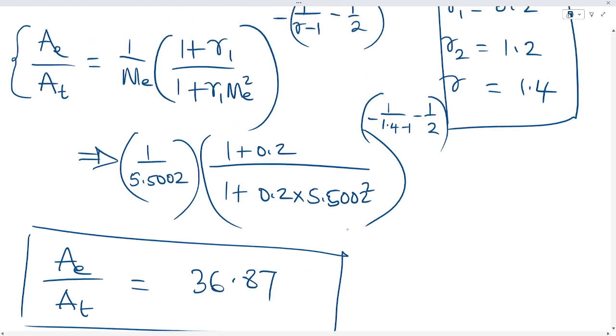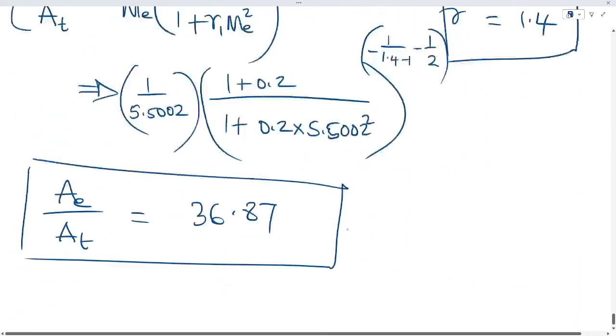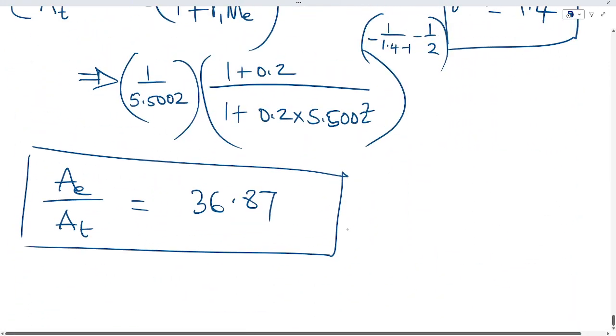So that shows the ratio of the throat and the ratio of the exit, which are at different circumferences from the center of the nozzle. Therefore, the ratio Ae to At equals 36.87. Thank you for staying.